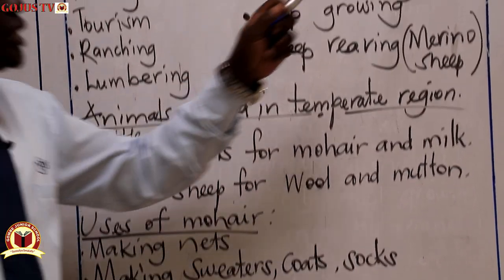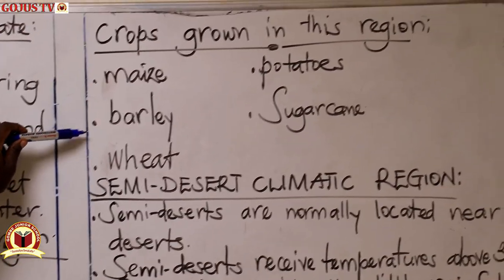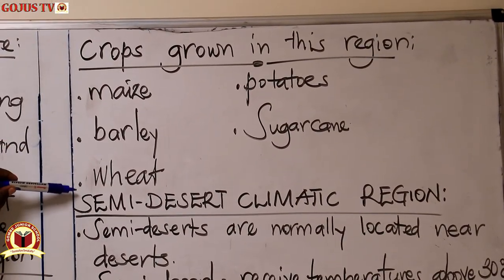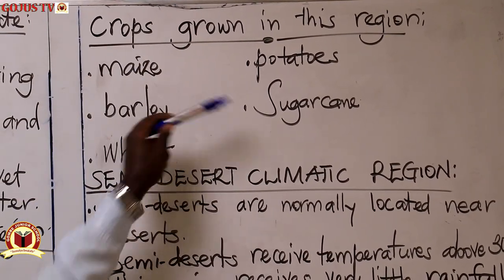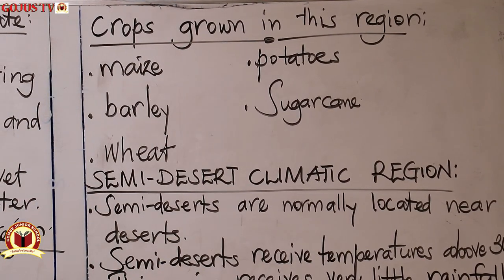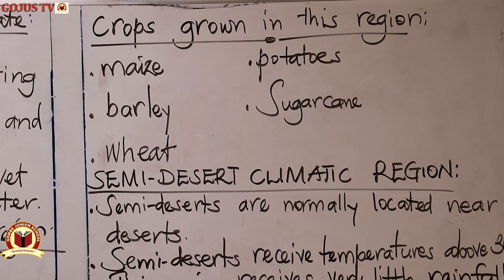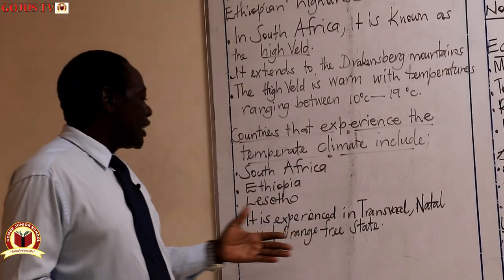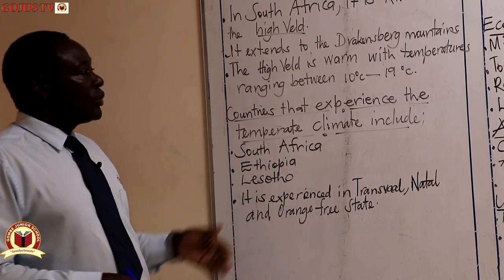Crops grown in this region include maize, barley, wheat, potatoes, and sugarcane. So when they talk about the temperate region, just know they are talking about that area in South Africa — Transvaal, Natal, and Orange Free State — as well as Lesotho and Ethiopia.